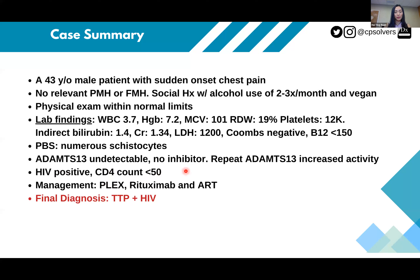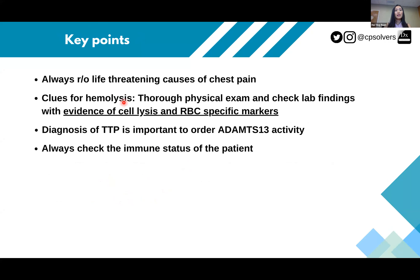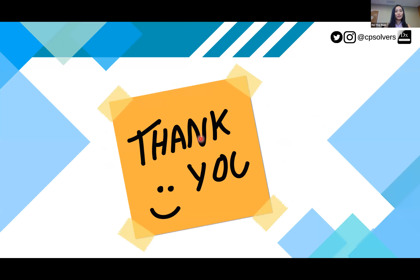An important management point: with TTP you must treat the patient empirically. If you suspect TTP, do not wait for the ADAMTS13 result — start plasma exchange immediately. Key takeaways: always rule out life-threatening causes of chest pain first; look for clues of hemolysis through thorough physical exam and lab findings including cell lysis markers and RBC-specific markers; for diagnosis of TTP, order ADAMTS13 activity; and always check the immune status of the patient.